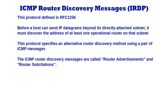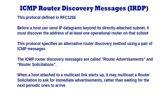Each router periodically multicasts a router advertisement from each of its multicast interfaces, announcing the IP addresses of that interface. Hosts discover the addresses of their neighboring routers simply by listening for advertisements. When a host attached to a multicast link starts up, it may multicast a router solicitation to ask for immediate advertisements rather than waiting for the next periodic ones to arrive.